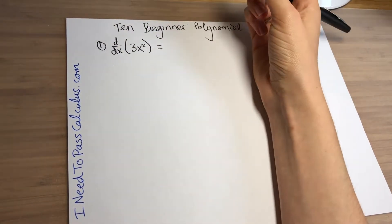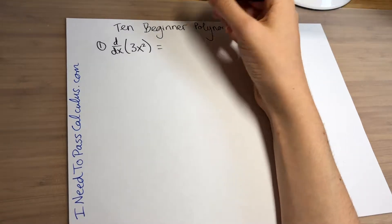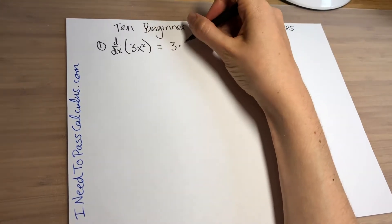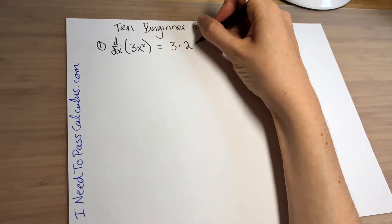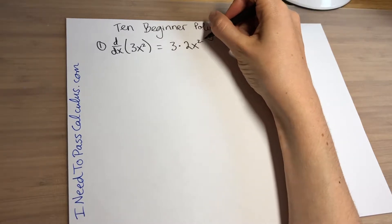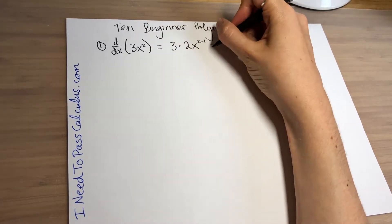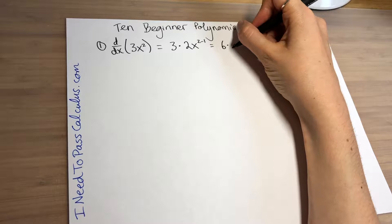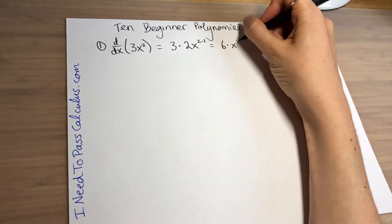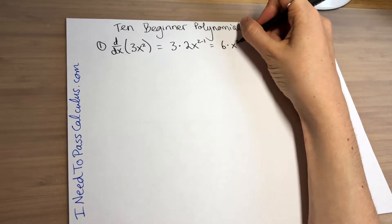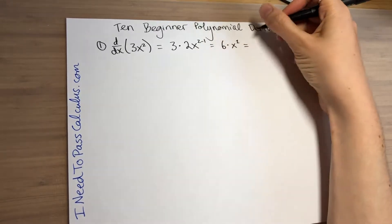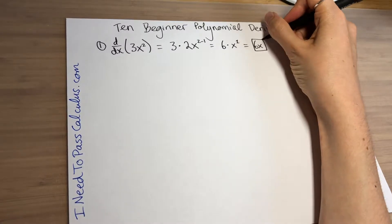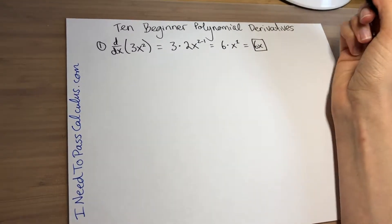Problem one is the derivative of 3x squared. For the power rule, you leave any number out front alone and bring down the exponent — the 2 comes down out front, and you subtract 1 from the exponent so that exponent of 2 becomes a 1. Our final answer is 6x.